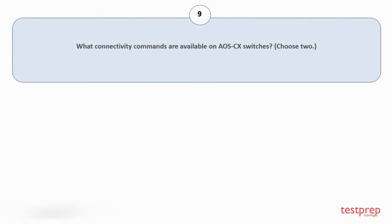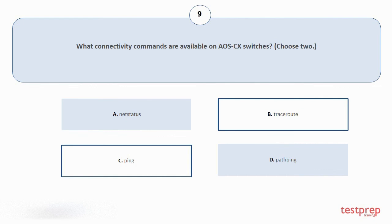Question number 9, What connectivity commands are available on AOS-CX switches? Choose 2. Your options are: Net status, Traceroute, Ping, Path ping. The correct answers are option b and c.